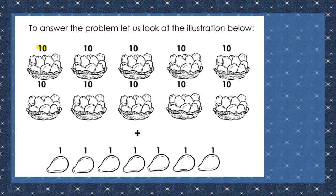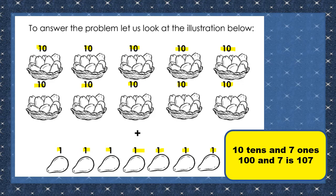There are 10 baskets of avocados: 1, 2, 3, 4, 5, 6, 7, 8, 9, 10, and 7 more individual avocados: 1, 2, 3, 4, 5, 6, 7. We have 10 tens and 7 ones. 10 tens is equal to 100. 7 ones is equal to 7. If we put together 100 and 7, we will get 107.